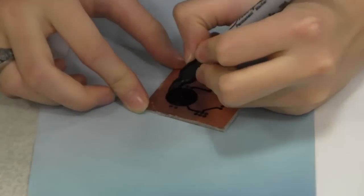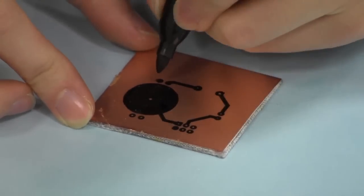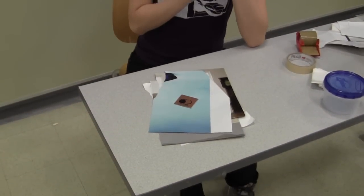Sometimes the hot iron does not melt the entire circuit onto the copper, so we take a permanent marker and pencil in the parts that the iron missed.